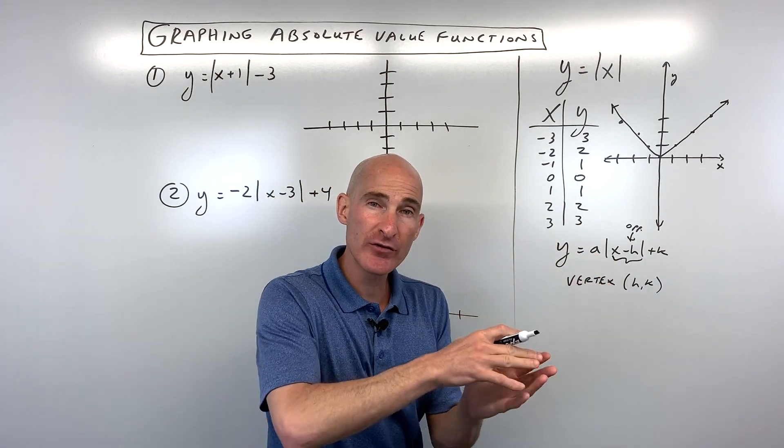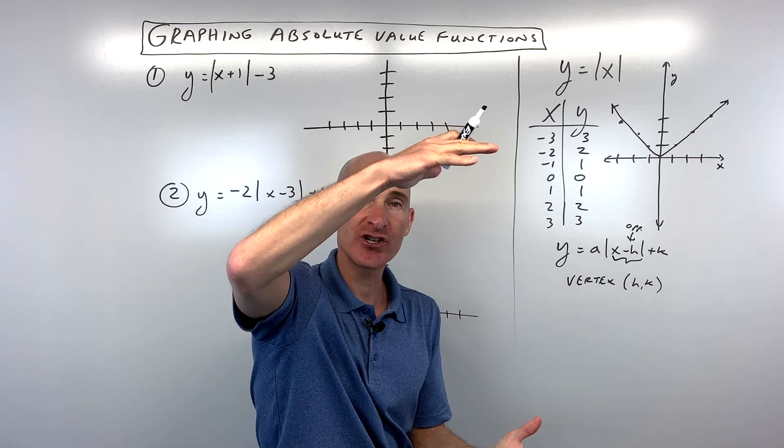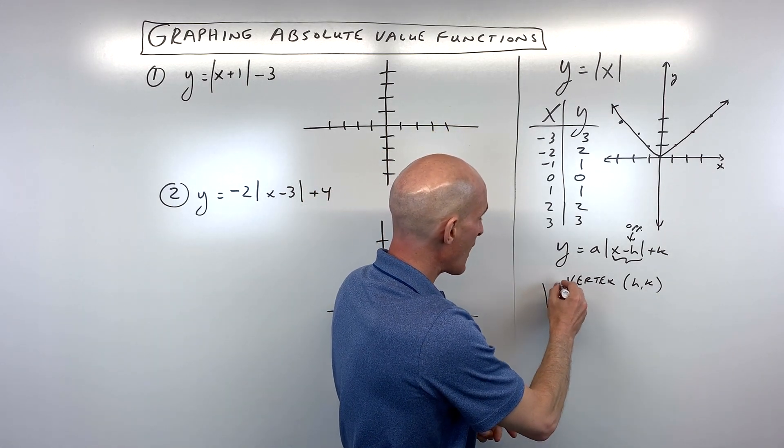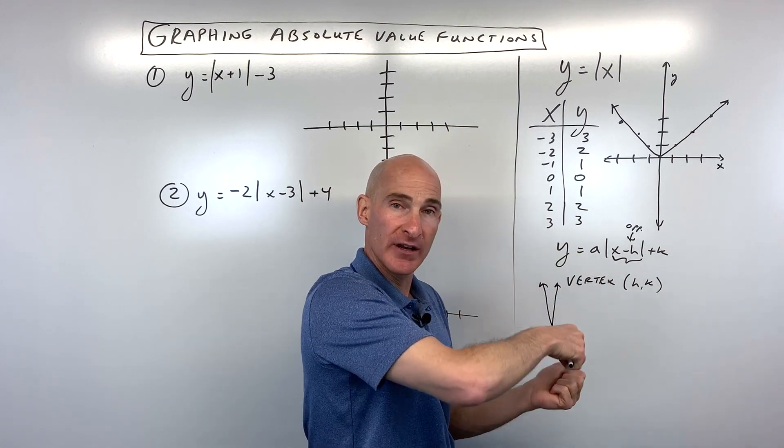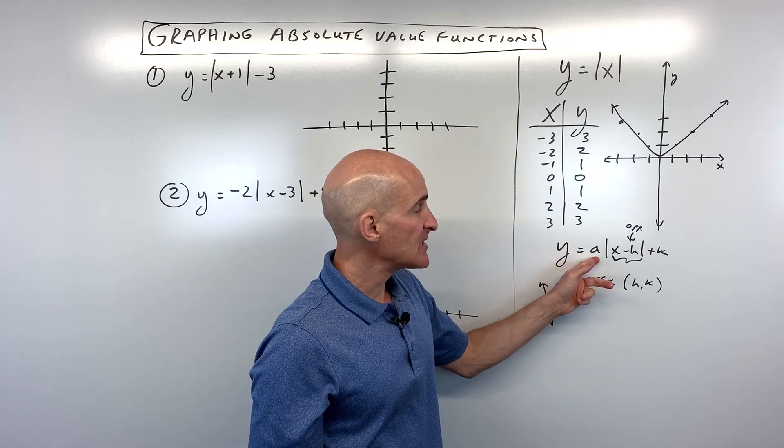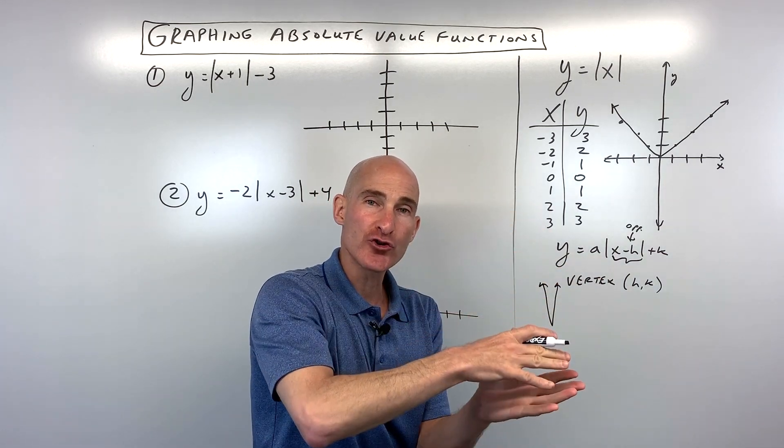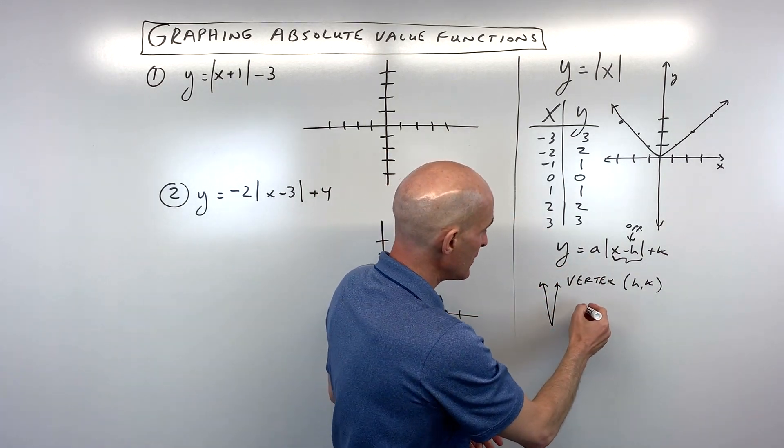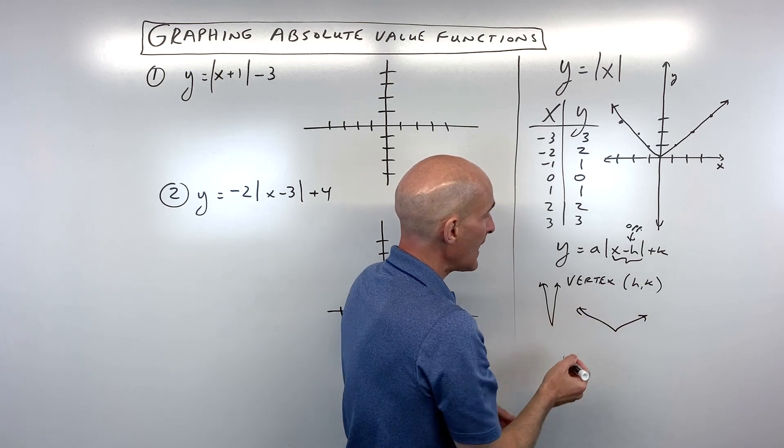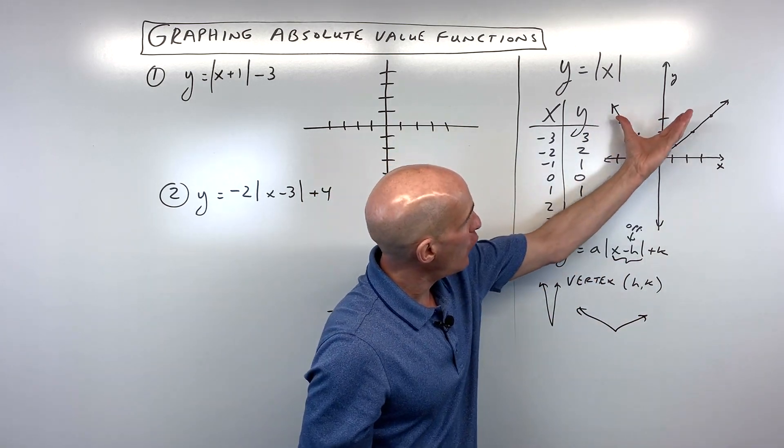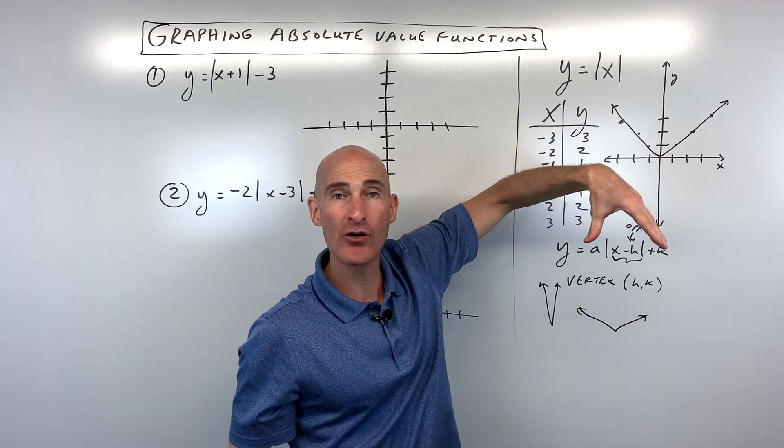Now the a value, if it's greater than one, it's going to be a vertical stretch, meaning that the graph is going to be narrower. It's like you're pulling it in the vertical direction. If a is between zero and one, we call it a vertical shrink or a vertical compress. It's going to make it wider like that. And if it's negative, it's going to reflect it over the x-axis, meaning it's going to open down like that.